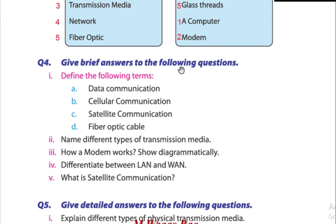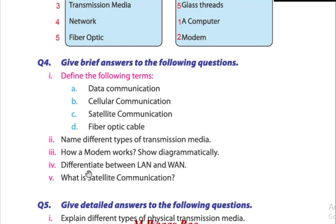Give brief answers to the following questions. Define the following terms: data communication, cellular communication, satellite communication, and fiber optic cables. Go through the pages and you will get the direct answers. Name different types of transmission media — as we know there are three types: twisted pair, coaxial, and fiber optic.